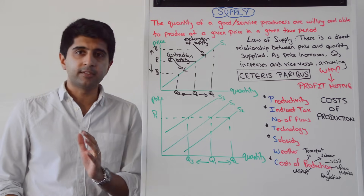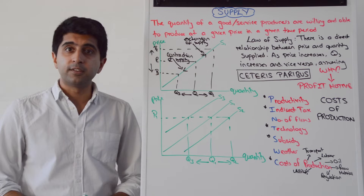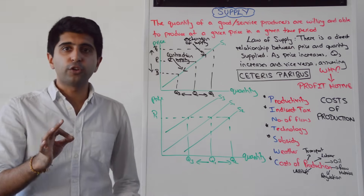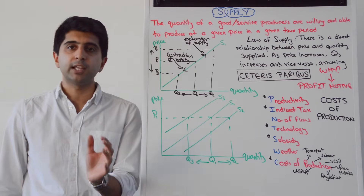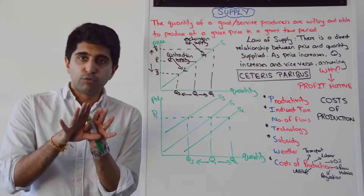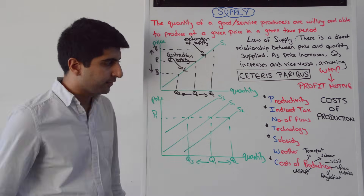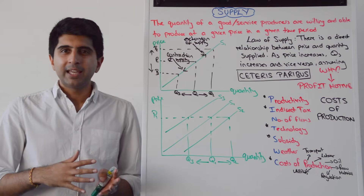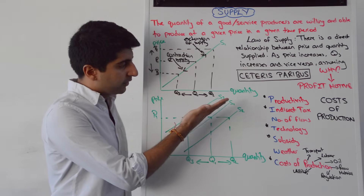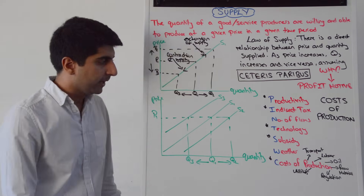T is technology. Technology massively increases or decreases the willingness and ability to supply by affecting costs of production. An improvement in technology reduces costs of production and shifts the supply curve to the right from S1 to S2. Whereas if technology gets worse or becomes outdated, the supply curve shifts to the left from S1 to S3.